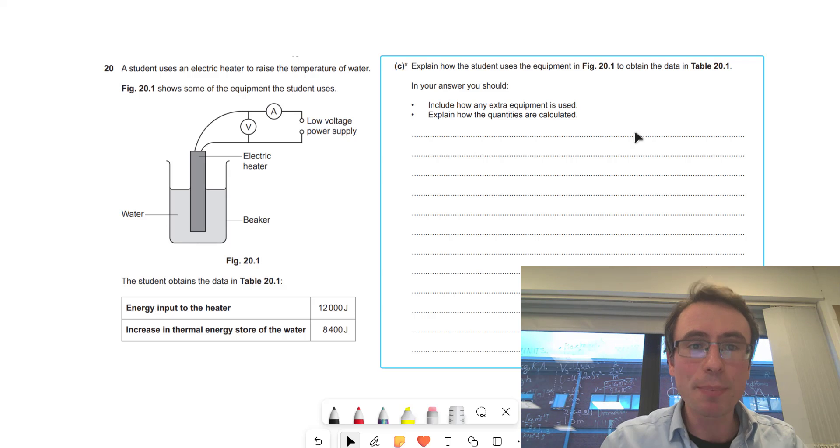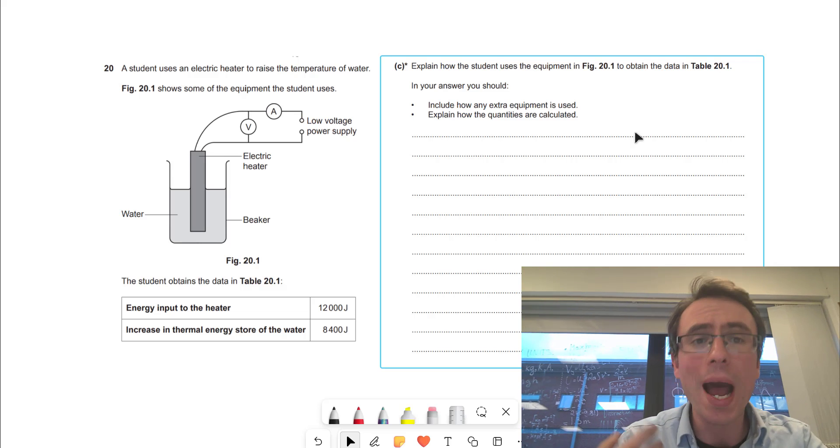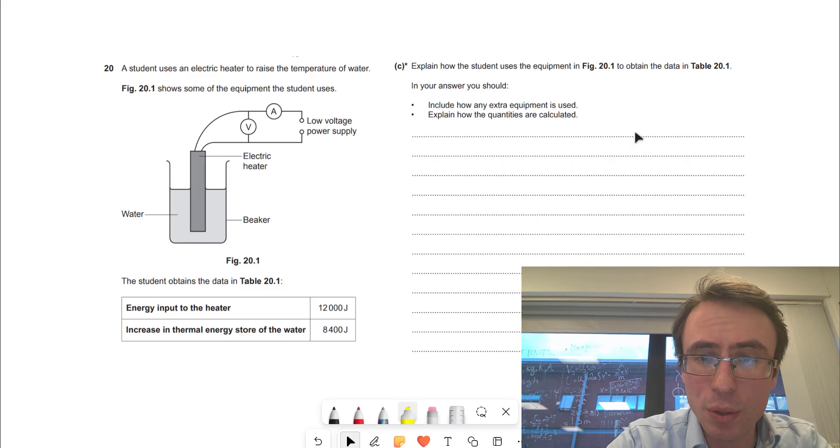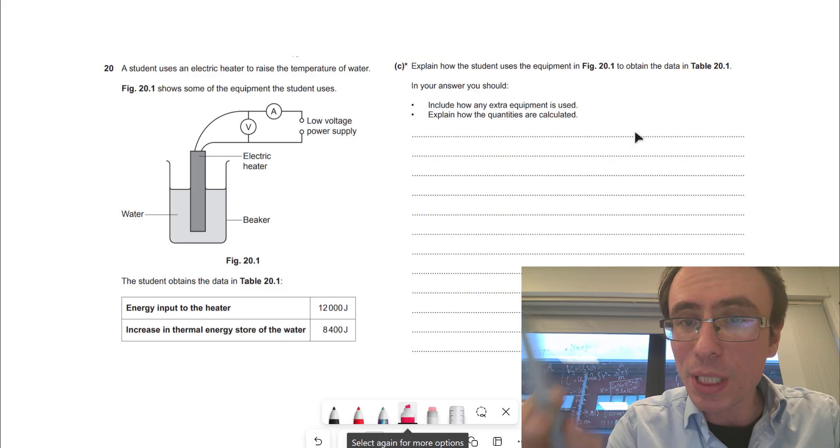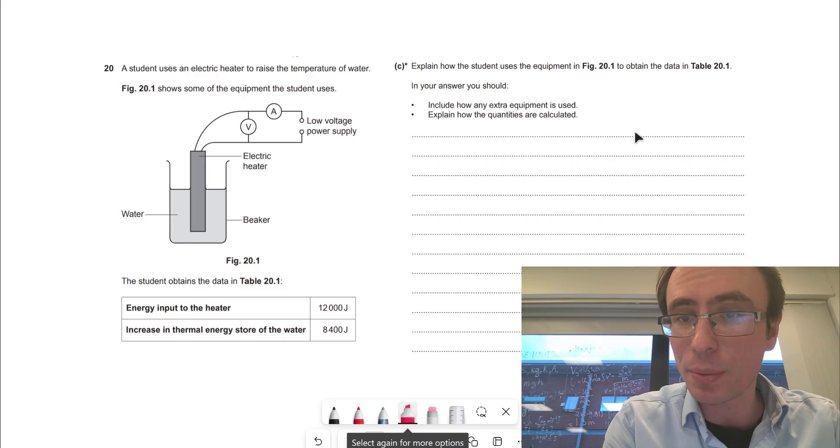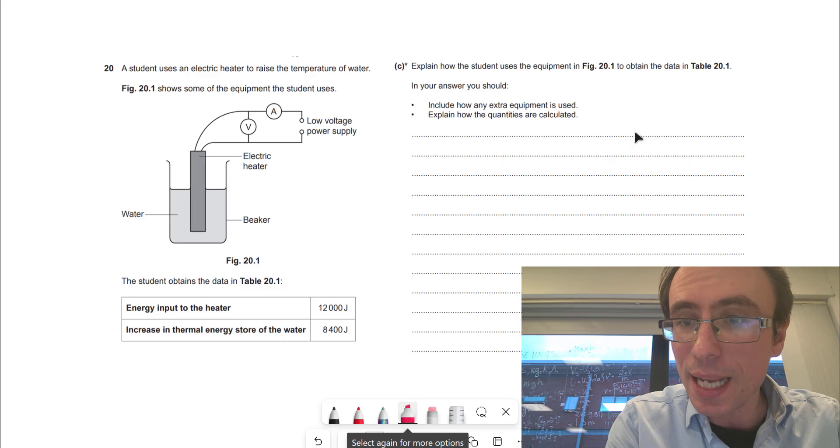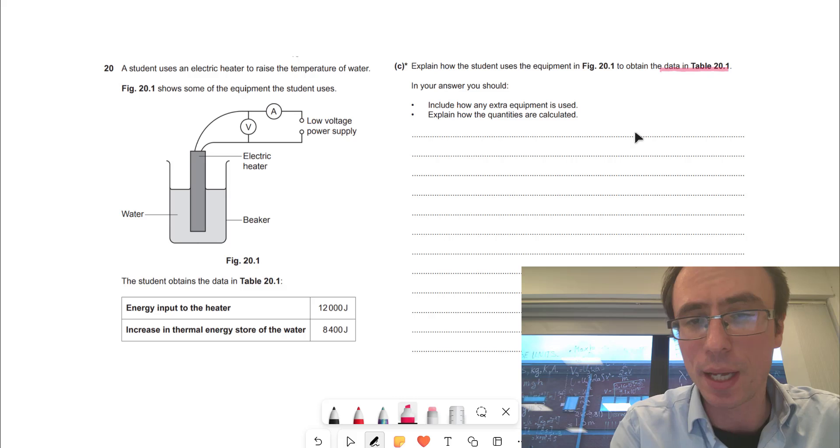The first really important tip with six markers is not to panic and to read things really carefully. I would also highlight what we need to do. So in this case we need to answer how the student obtained the data in the table, and I'm just going to highlight that.